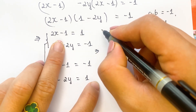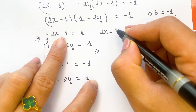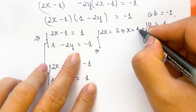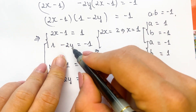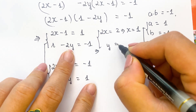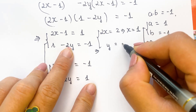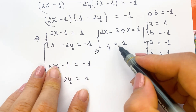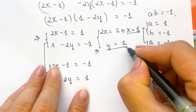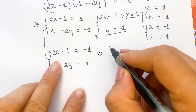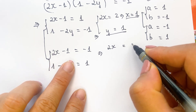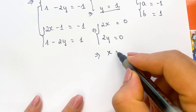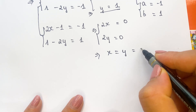For case number 1, 2x equals 2, which means x equals 1. With x equals 1, we have y equals 1. And for case number 2, we can have 2x equals 0 and 2y equals 0. So we also have the value x equals 0 and y equals 0.